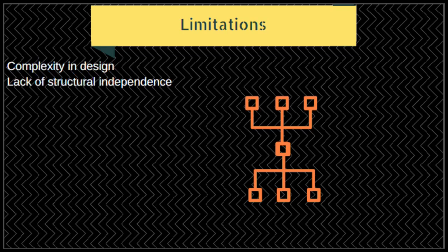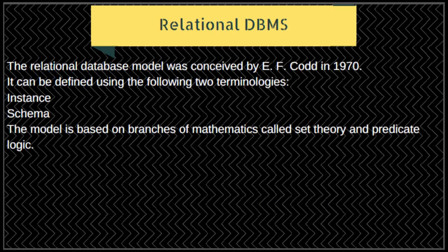The relational DBMS was conceived by E.F. Codd in 1970. It is defined using two key terms: instance — a table with rows and columns — and schema, which specifies the structure, including the name of a relation and the name and type of each column. This model was based on branches of mathematics called set theory and predicate logic.